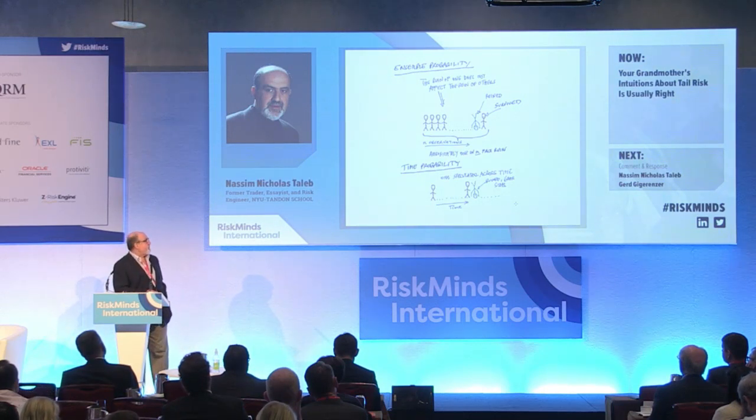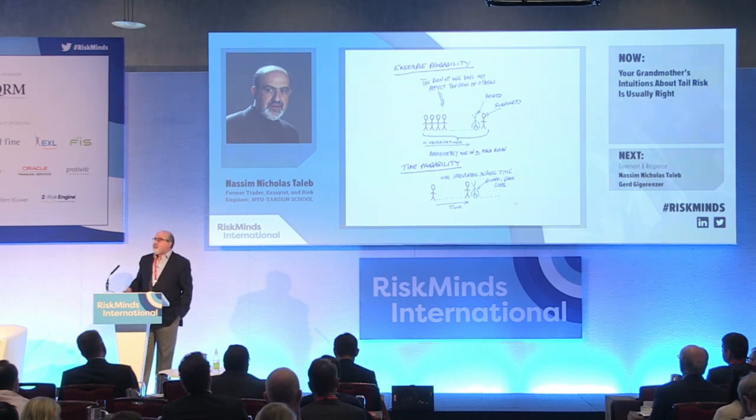But if you take a single speculator and make him go to the casino 100 times, on day 29 the speculator goes bust. What happens on day 30? There is no day 30. This is called the time average versus the ensemble average — they are not the same. Any speculator subjected to ruin will eventually be ruined; it's only a matter of time. You have to look at the stopping time of ruin.